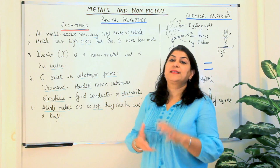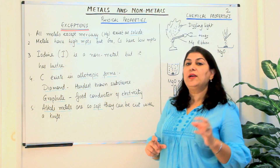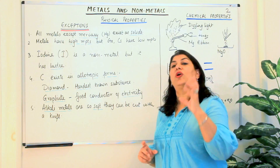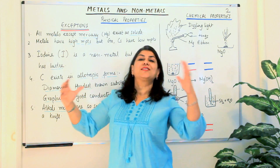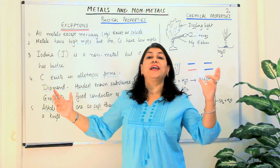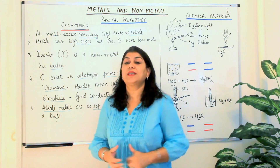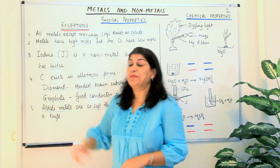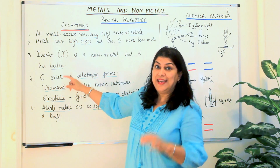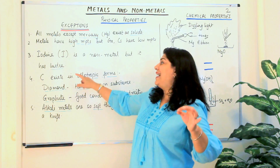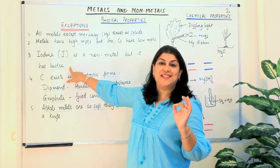The third exception is iodine. Iodine is a non-metal, and we say that metals have lustre and shine while non-metals do not have lustre. But iodine is a non-metal yet it has lustre — it shines.